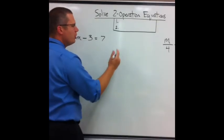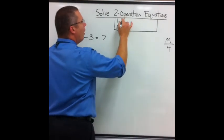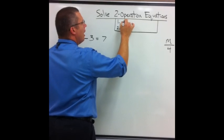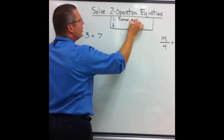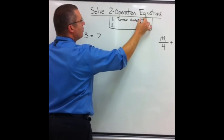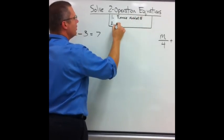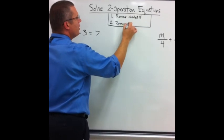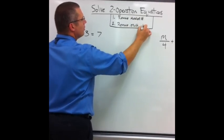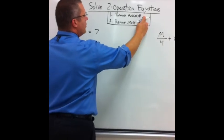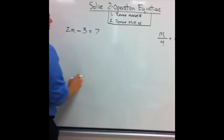It will come down to following two separate steps. One is I must remove the added number first, or add opposites. The second step is going to be to remove the multiplied number. So add opposites first, multiply by reciprocal second.